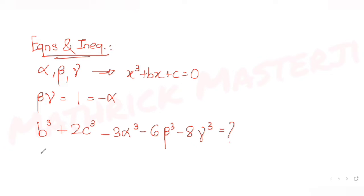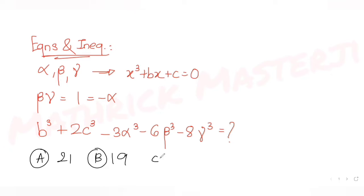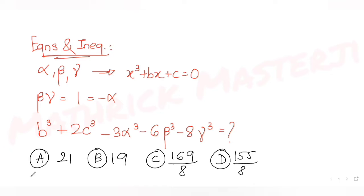The answer choices given are: 21, 19, 169 divided by 8, and 155 divided by 8. We need to figure out which one of these is the correct answer. Let's figure out how to solve this question.